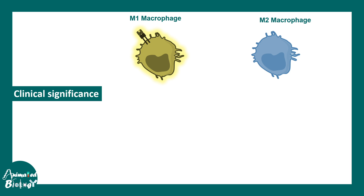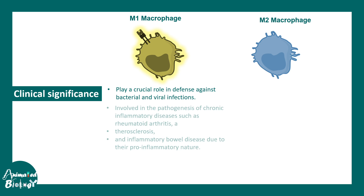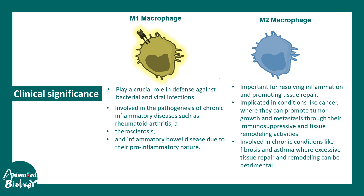In terms of clinical significance, M1 macrophages play a crucial role in defense against bacterial and viral infections, and are involved in the pathogenesis of chronic inflammatory disorders such as rheumatoid arthritis, atherosclerosis, and inflammatory bowel disease. M2 macrophages are important in tissue repair, but are also implicated in cancer — by reducing immune activity, they may promote metastasis. A fine-tuned balance between M1 and M2 activation is therefore important in the context of disease.